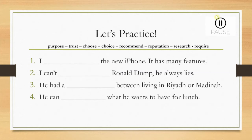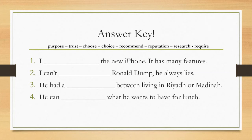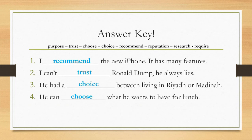Let's practice some more. Using the words we have just learned, fill in the blanks. You can pause this video and when you are ready, continue. Number one: I recommend the new iPhone — it has many features. Number two: I can't trust Ronald Dump — he always lies. Number three: he had a choice between living in Riyadh or Medina. Number four: he can choose what he wants to have for lunch.